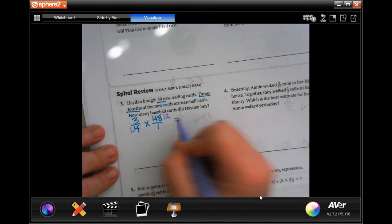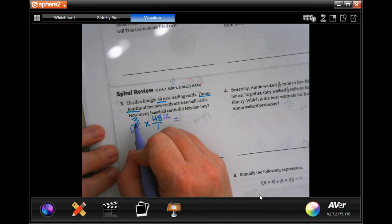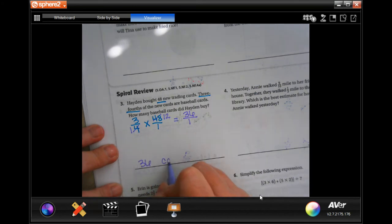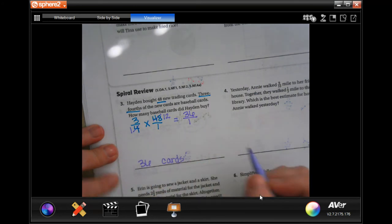So now, I have 3 times 12 is 36, and 1 times 1 is 1, which means 36 cards.